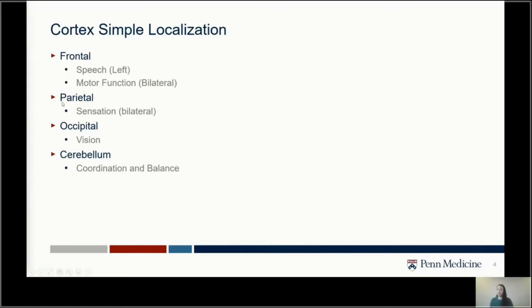The parietal lobe, the back part of the brain, is largely responsible for sensation. The left side of the brain controls sensation on the right, and the right side controls sensation on the left. The very back of the brain, the occipital lobe, is largely responsible for vision — which is an underrated part of the scoring systems and important to understand.